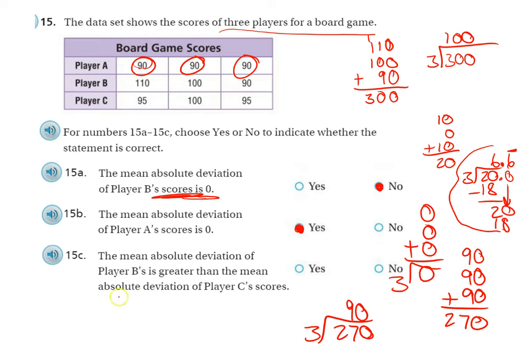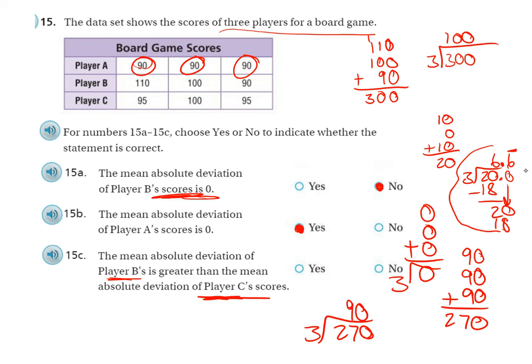And now all you need to do is follow the same steps that I did to find the mean absolute deviation for player A and B. Do that same thing for player C. And then see if B has a greater mean absolute deviation or if C has a greater mean absolute deviation. If 6.6 is bigger than the number you find for player C, then you're going to mark yes. If 6.6 is less than the number you find for player C, then you're going to mark no.